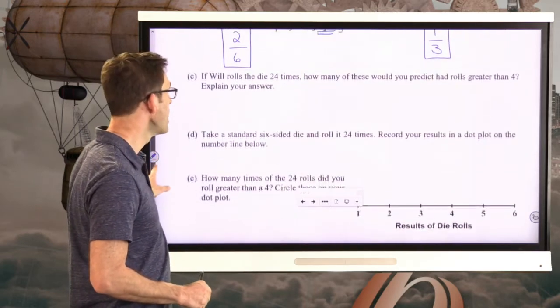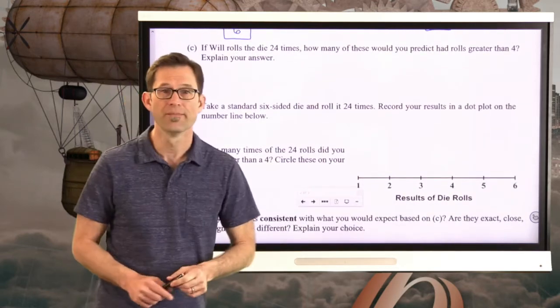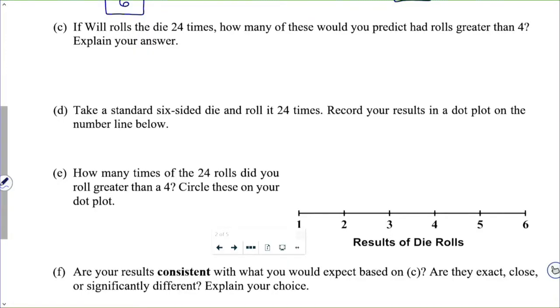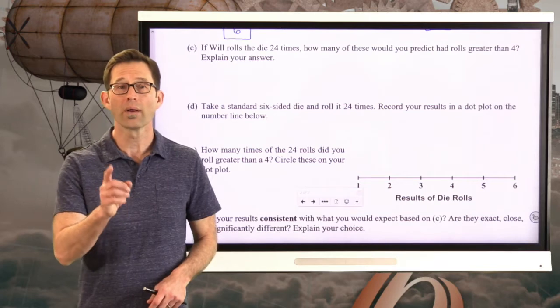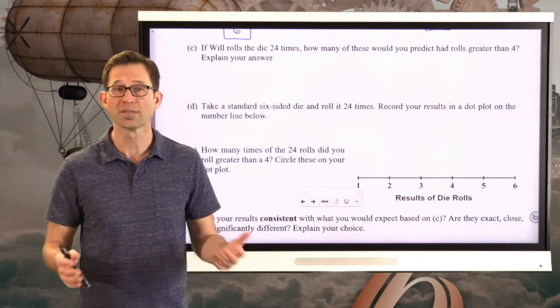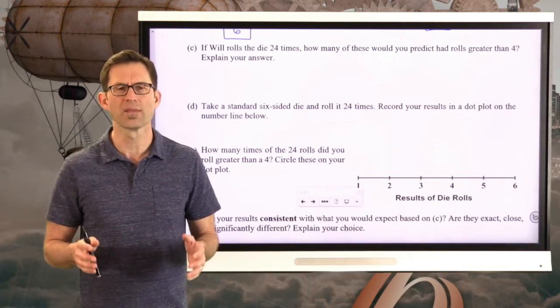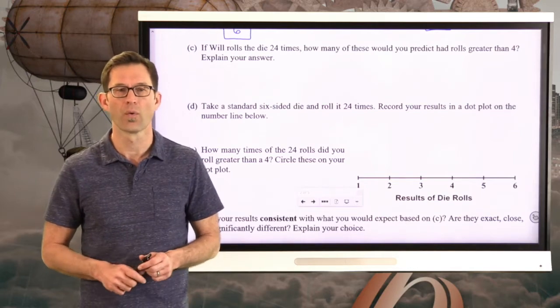It's pretty much that simple. By the way, eventually, you're going to need a die, a single six-sided die, for this problem. So make sure to have one of those handy. I should have mentioned it right away, but make sure you've got one. Let's take a look now at letter C. If Will rolls the die 24 times, how many of these would you predict had rolls greater than 4? Explain your answer. Pause the video now and see what you get.